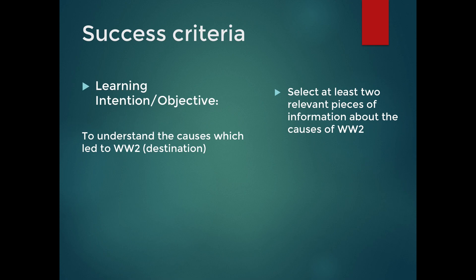So taking the objective to understand the causes which led to World War 2 — which is your destination — part of the success criteria might be: select at least two relevant pieces of information about the causes of World War 2. We would expect a teacher to share some source material or background reading about World War 2 and model how to extract relevant information, then have students engage in deliberate practice of selecting and retrieving pieces of information.